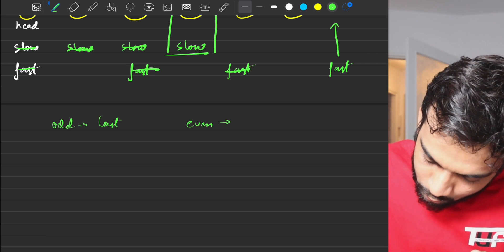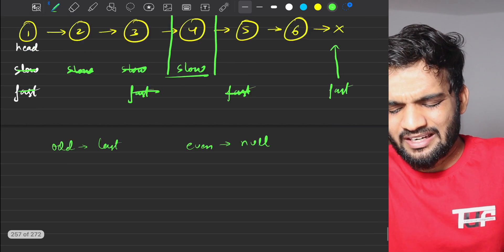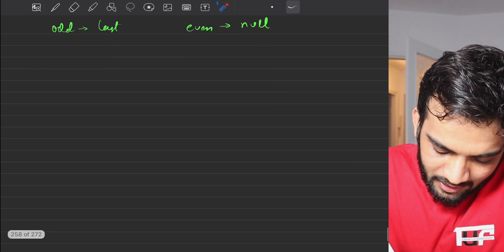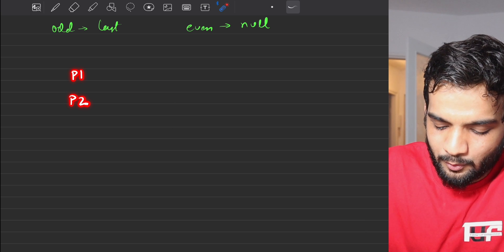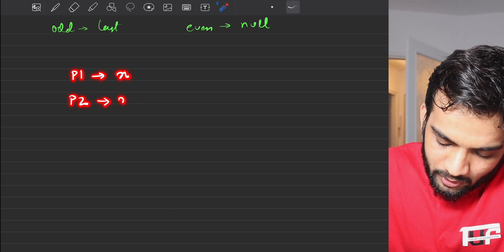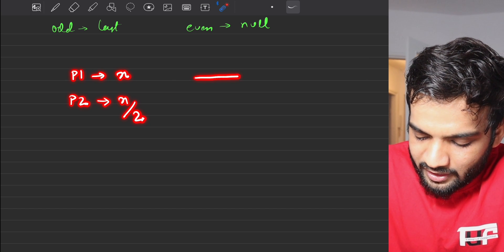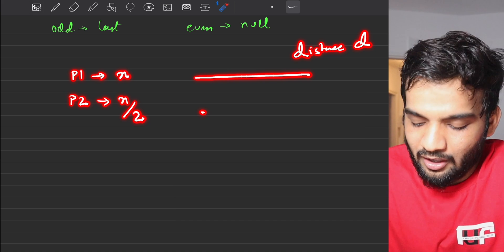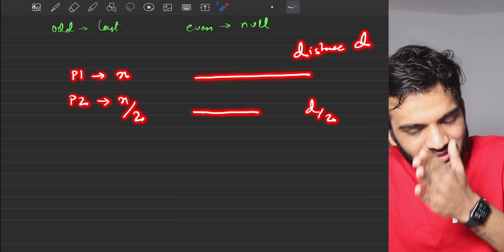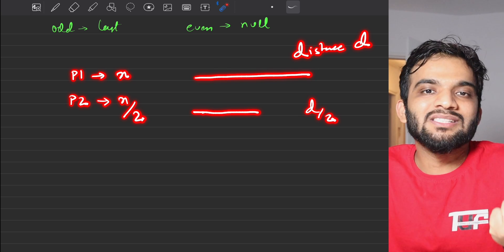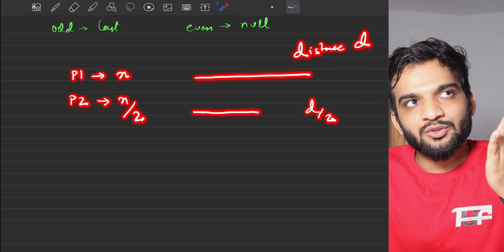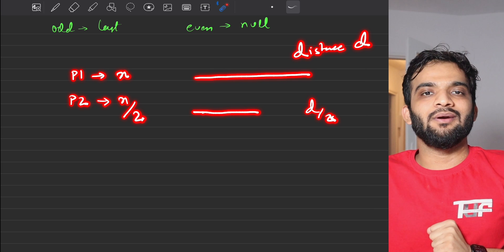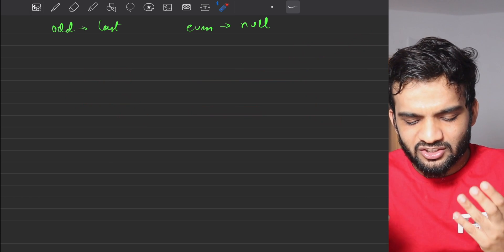The intuition is simple: if two people P1 and P2 travel at speeds x and x/2 respectively, and P1 covers distance d, then P2 covers d/2. Similarly, when the fast pointer reaches the end, the slow pointer will be standing at the middle — halfway through the list.